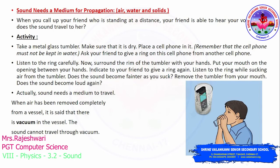Close the tumbler completely against your mouth and ask your friend to give a ring again. While listening to the ring, try to suck the air from the tumbler. When you suck the air out, listen to the sound again — the sound will become less loud, it will become fainter. When you remove the tumbler from your mouth, the sound will become louder again.